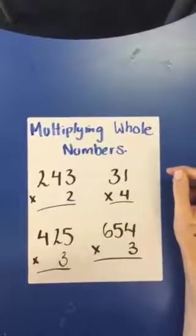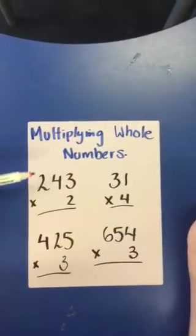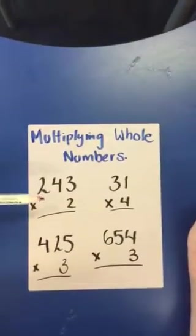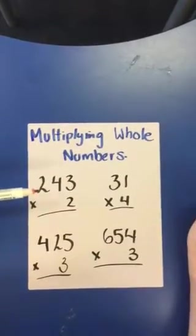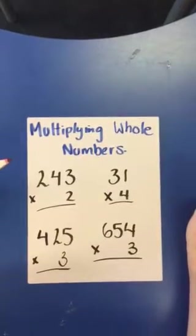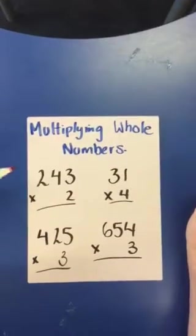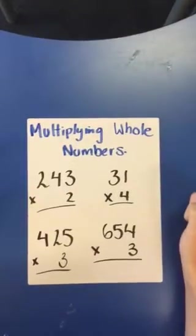All right, this video is about multiplying whole numbers. So it might be something like 243 kids from our school times by 2. So we might be talking about all the kids at St. Thomas and all the kids at Loretto, Nedlands. What is the total number of kids?